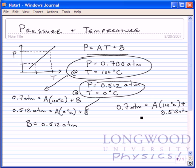So, I can use this equation and solve for A. A equals 0.7 atm minus 0.512 atm divided by 100 degrees Celsius,